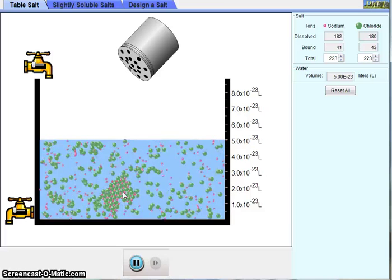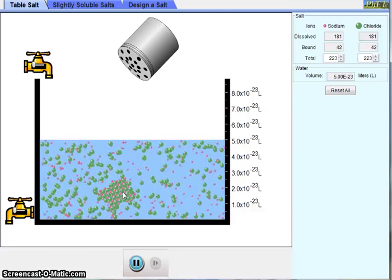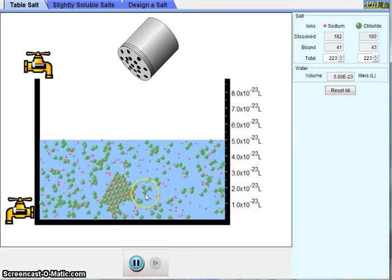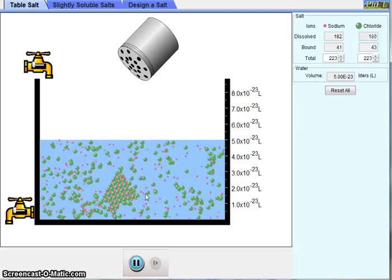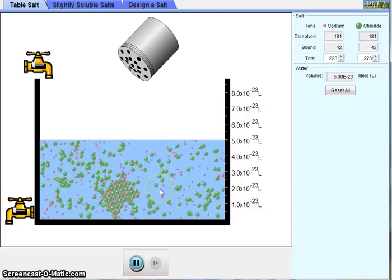We say that this is a reversible process when salt dissolves in water because there are actually two separate processes going on right now. If we watch the outside edge of the crystal, we can see that there are occasionally ions which are going to leave the crystal and go into the dissolved or the aqueous state.